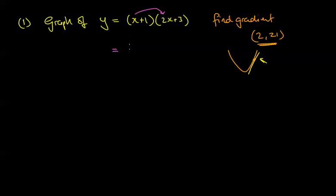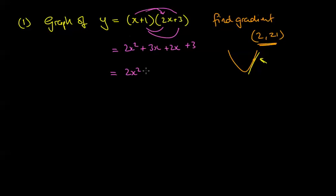Expanding gives us 2x² + 3x + 2x + 3, which simplifies to 2x² + 5x + 3. That's your function rewritten.